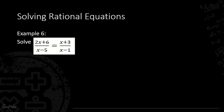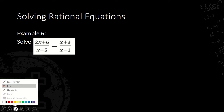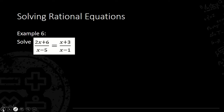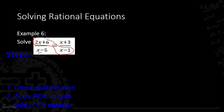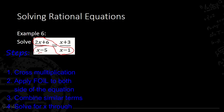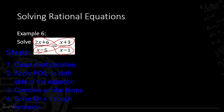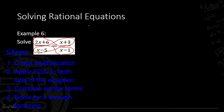Let's proceed with Example 6, which is a bit different from the previous three examples. The denominators here are binomials: x minus 5 and x minus 1. The procedure we will use for Example 6 is cross multiplication — we do not need to find an LCD for this.